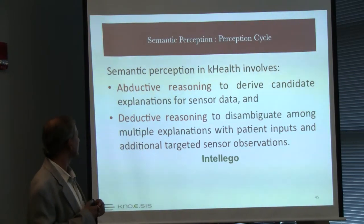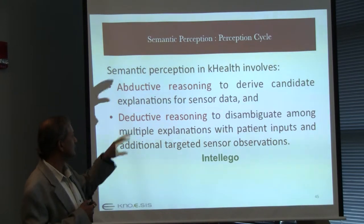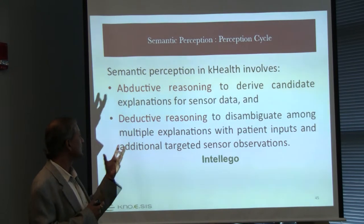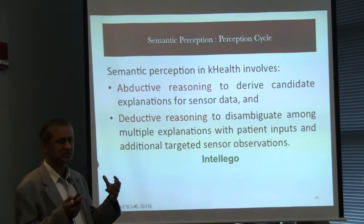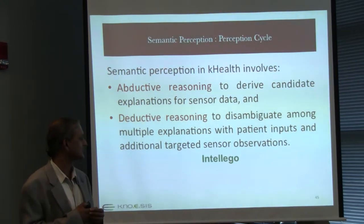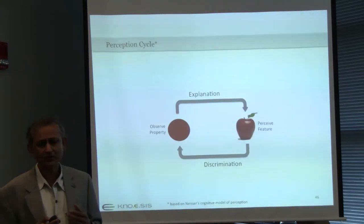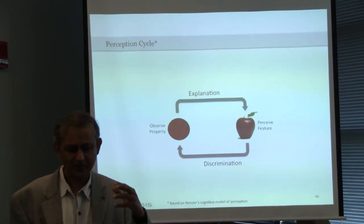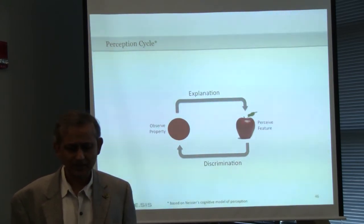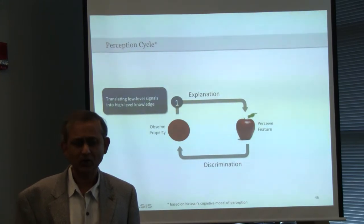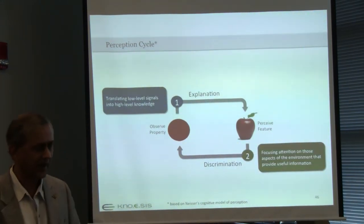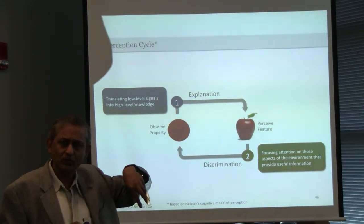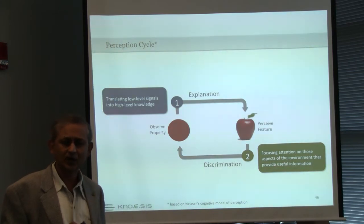Semantic perception in K-Health involves abductive reasoning — reasoning to derive candidate explanations for the data we have collected — and narrative reasoning to disambiguate among multiple explanations using patient inputs and additional targeted sensor observations. That is Intelligo. In the perception cycle, there are two parts: the abductive part of the cycle, which gives you explanations and helps build a hypothesis, and the narrative part, which discriminates to find a particular potential answer to the hypothesis.